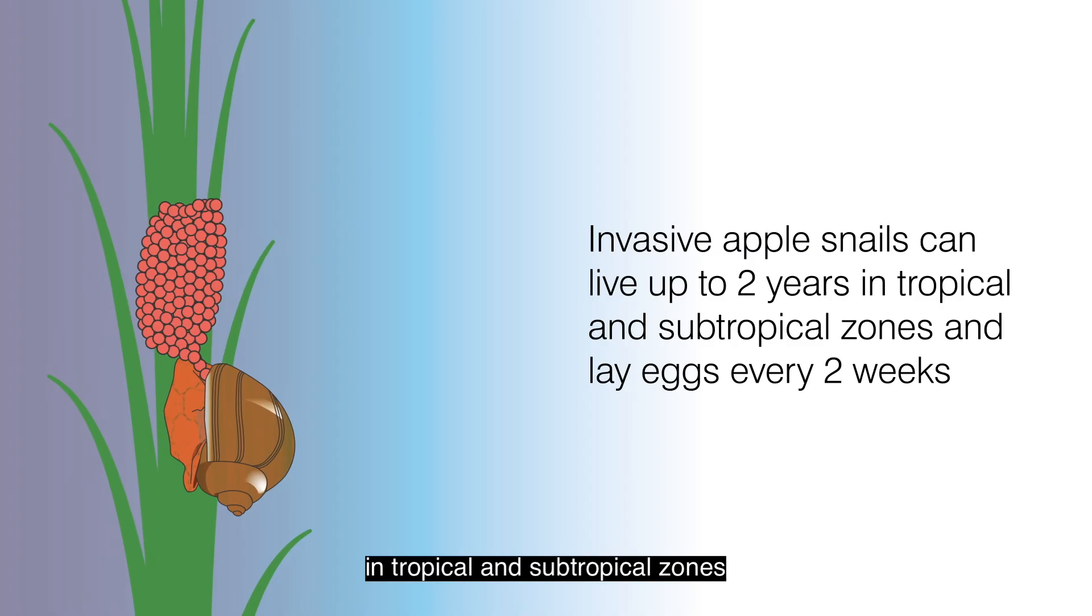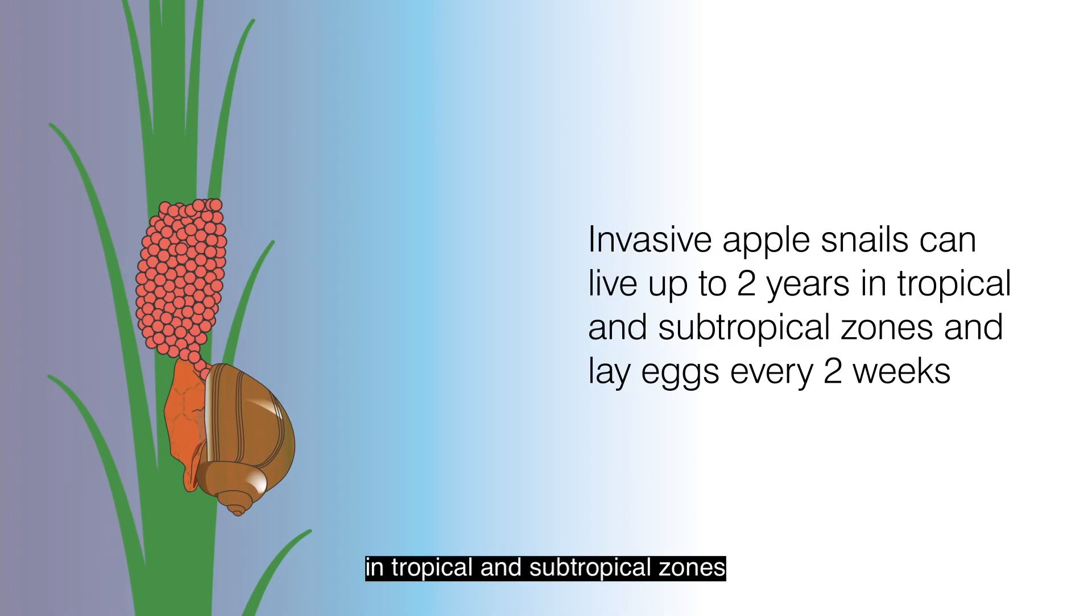Invasive apple snails can live up to 2 years in tropical and subtropical zones and lay eggs every 2 weeks. Due to warm temperatures, they do not hibernate and reproduce throughout their lifetime.